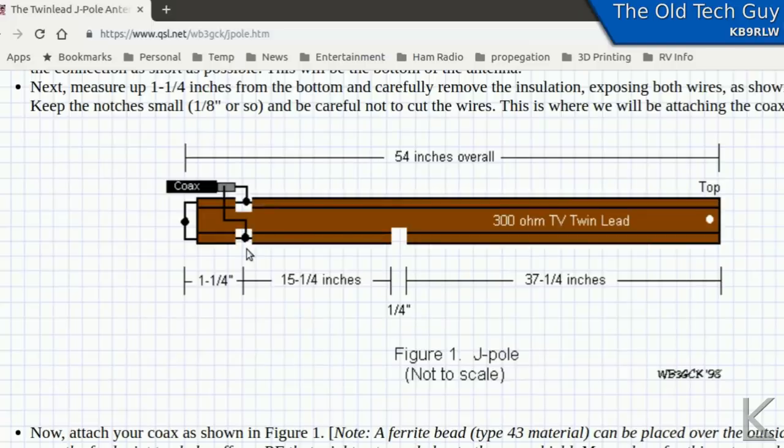Unless you're building this for like a packet digipeater or packet station and you want it at the bottom end of the band, then you probably would want to bring this down a little bit closer to the end. Actually I think a little further away from the end would put you at a lower frequency. Closer to the end would bring the frequency up. But anyway, that's really all there is to building this thing. You can knock it out in no time at all.